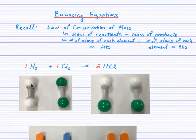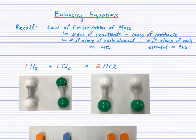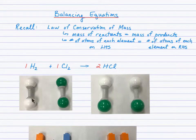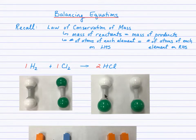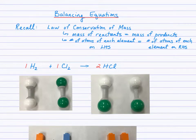Here we have the molecule H2 and the molecule Cl2. When bonds are broken and the same atoms recombine, we form products of HCl. With two hydrogen atoms in one molecule, that makes two hydrogen atoms available to bond with the two chlorine atoms to make the product particles.